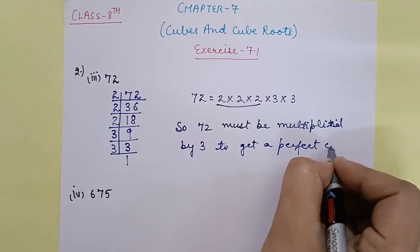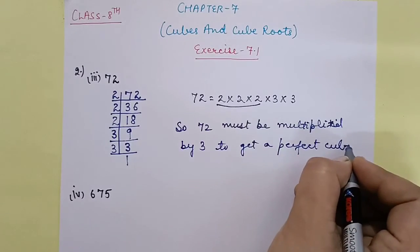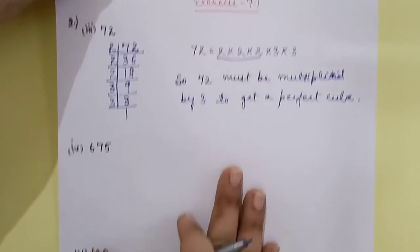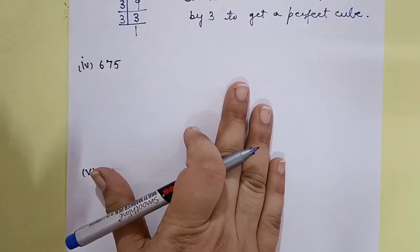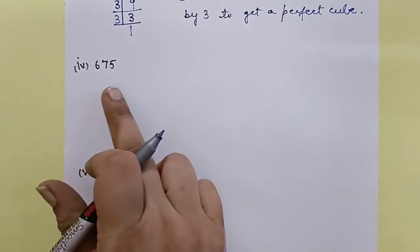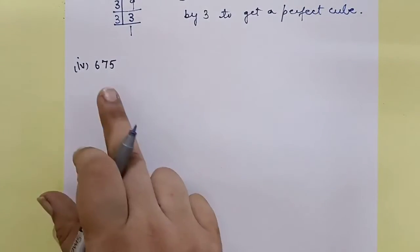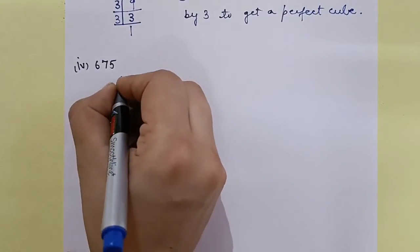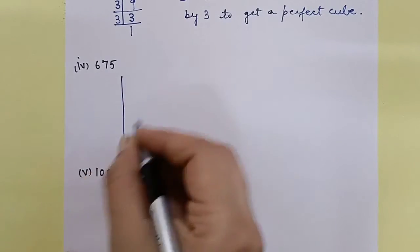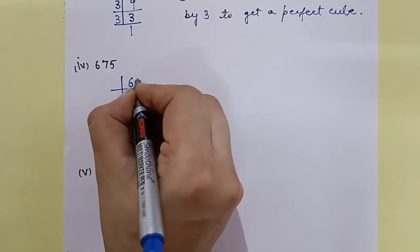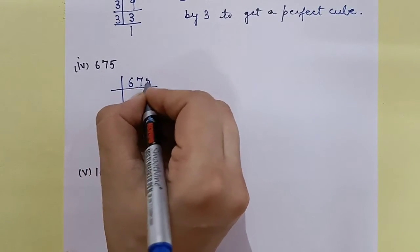Right. Next, let's see the 4th part. We need to check 675 — what must it be multiplied by to get a perfect cube?